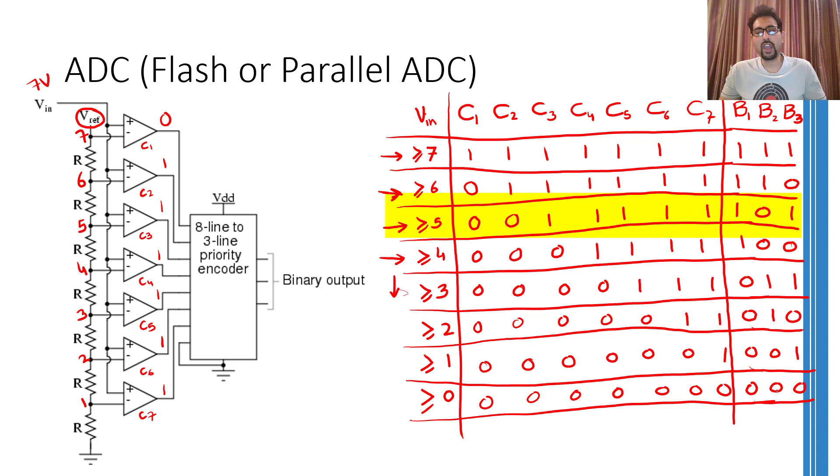Now if the input voltage is somewhere between 5 and 6, the binary output would be 1, 0, 1. And if the input voltage is somewhere between 2 and 3, the output would be 0, 1, 0. You can see that this kind of ADC requires only one clock pulse to give you the final binary output.